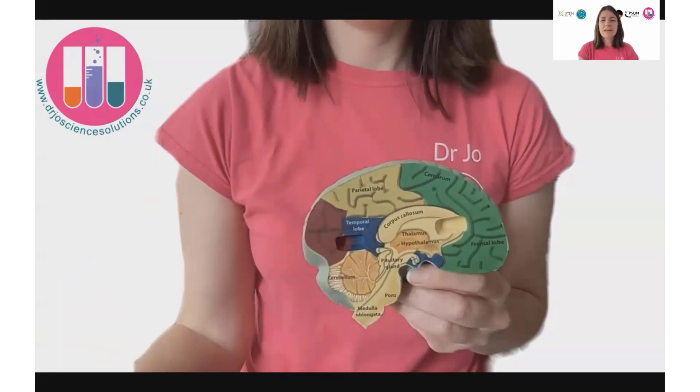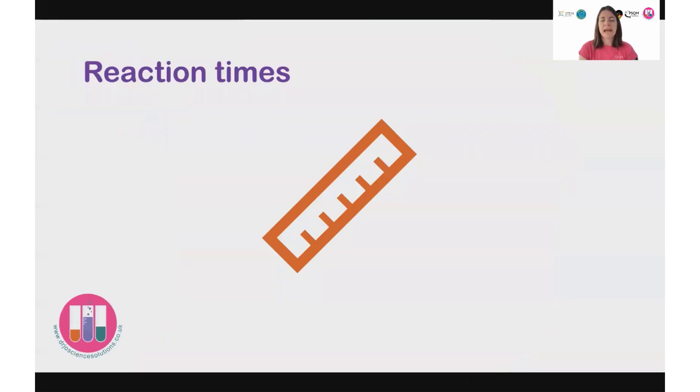So having an idea of what's happening in the brain then, a signal is coming in, it's being processed, and it's going out again so that you can react. Now we're going to have a go at testing reaction times in this STEM club.